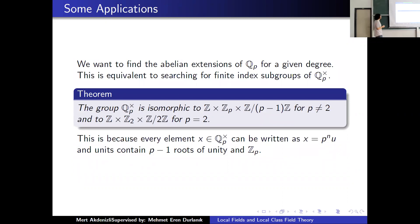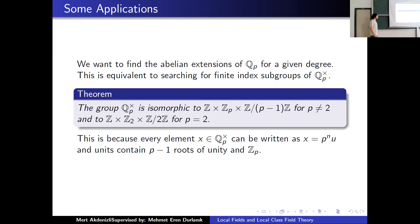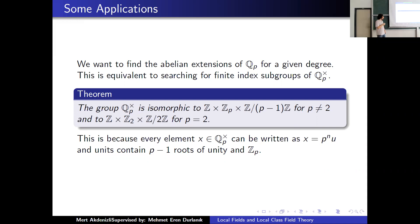We will now look at some applications. As a black box, we have the theorem that Q_p* is isomorphic to Z × Z/(p-1) × Z_p for p not equal to 2, and isomorphic to Z × Z/2 × Z_2 for p equals 2. We want to find the abelian extensions of Q_p for a given degree. This decomposition comes from the fact that an element of Q_p* can be written using a prime and units, and the units contain the (p-1)-th roots of unity and a copy of Z_p.